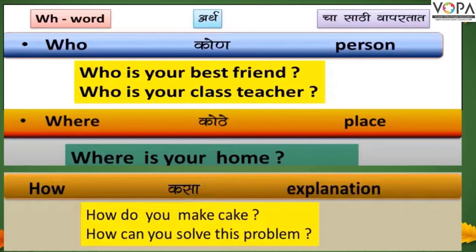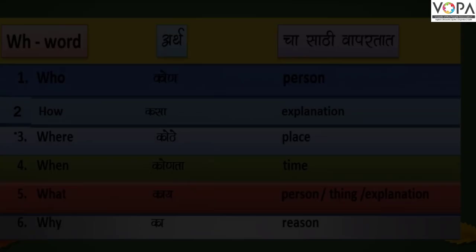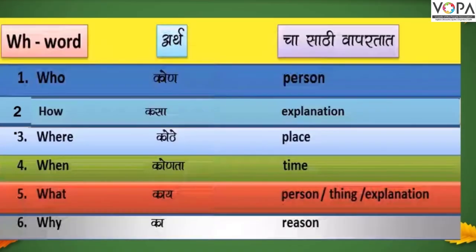HOW is used to ask for an explanation or manner. For example: How do you make cake? Tu cake kasa banavtes? How can you solve this problem? Tu he problem kase sodavtes? So now everything we have seen will be shown together on the next slide.